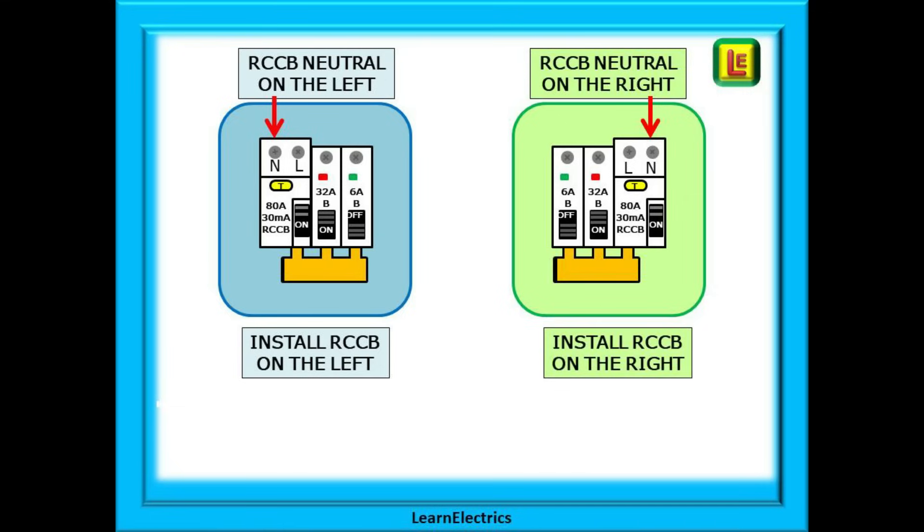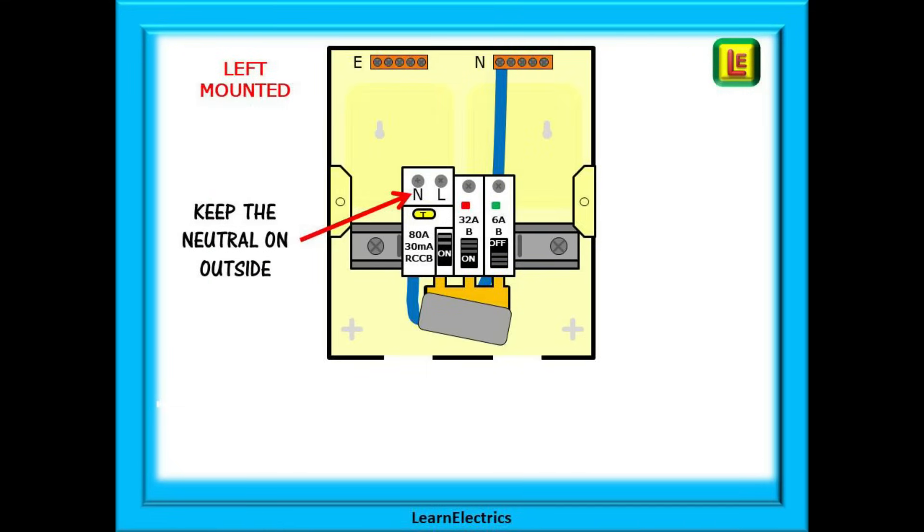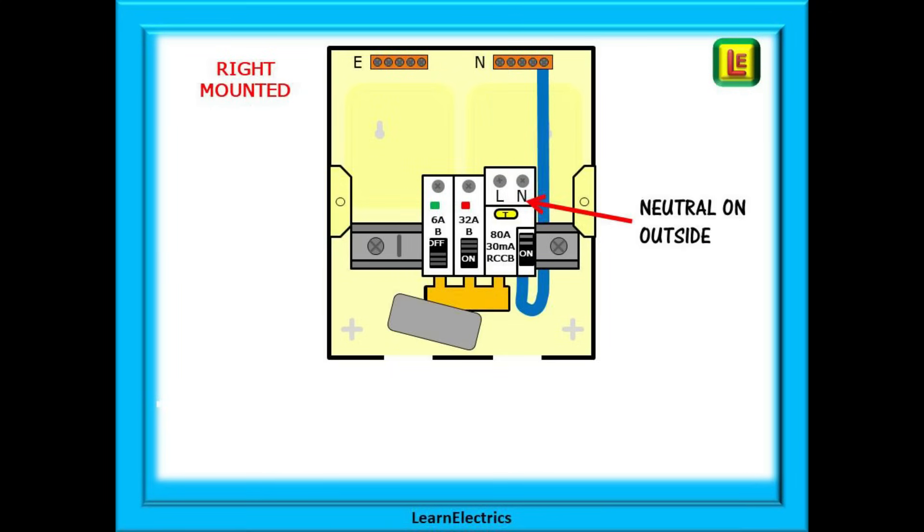Some devices have the neutral connections on the left and some on the right. If the neutral is on the left then the RCCB should be installed as the left most device in the garage unit so that the neutral is on the outside. Other devices will have the neutral on the right and these must be installed as the right most device and the neutral must again be on the outside.